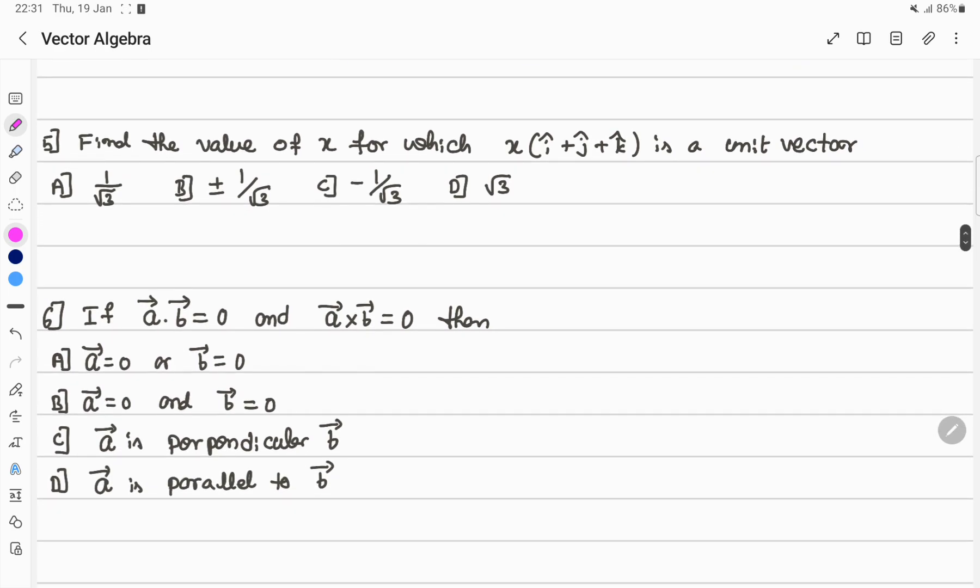Next question: find the value of X for which X times (i plus j plus k) is a unit vector. If it is a unit vector, magnitude equals 1. The coefficient of i is X, so we have Xi plus Xj plus Xk. If you apply magnitude, this equals 1.